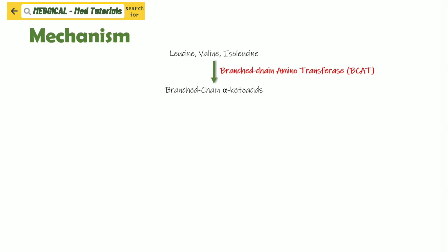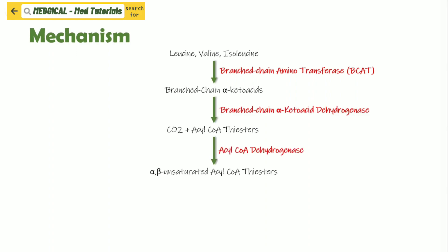Regarding the mechanism of Maple Syrup Urine Disease: leucine, valine, and isoleucine in the human body form branched-chain alpha-keto acids with the help of the enzyme branched-chain aminotransferase. From that, it forms CO2 plus acyl coenzyme A thioesters with the help of the enzyme branched-chain alpha-keto acid dehydrogenase. It then forms alpha-beta-unsaturated acyl coenzyme A thioesters with the help of enzyme acyl coenzyme A dehydrogenase.